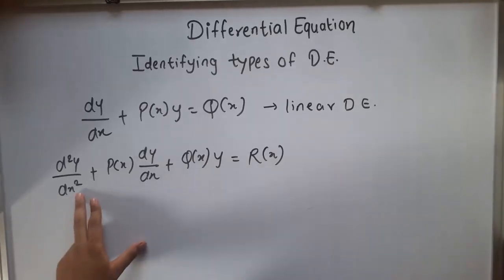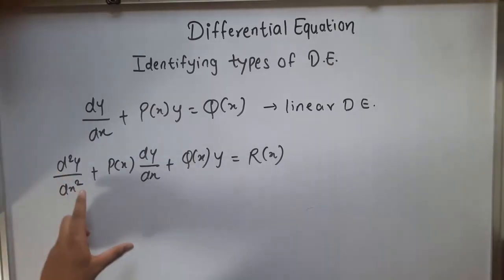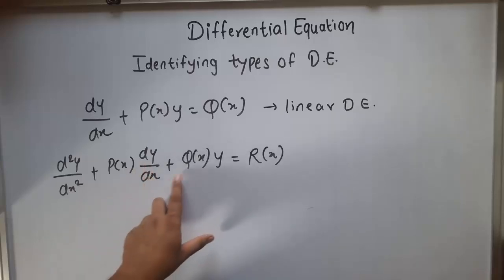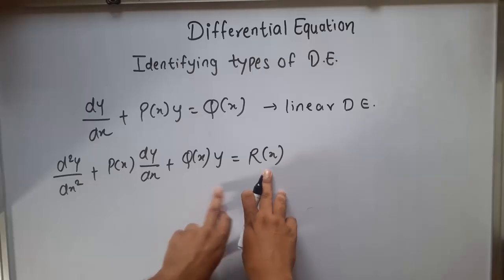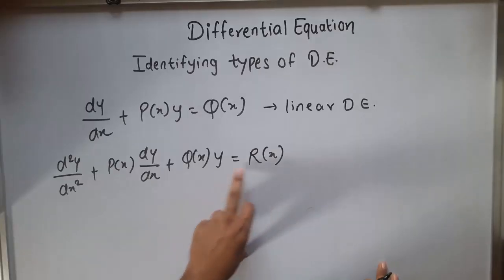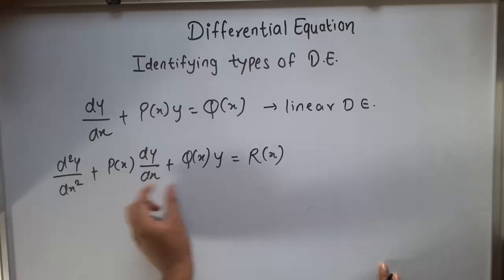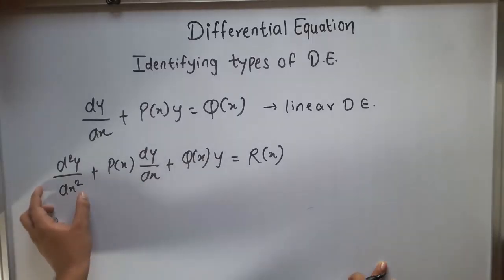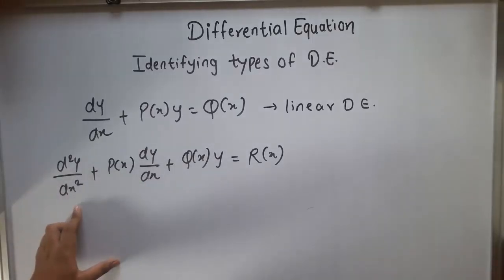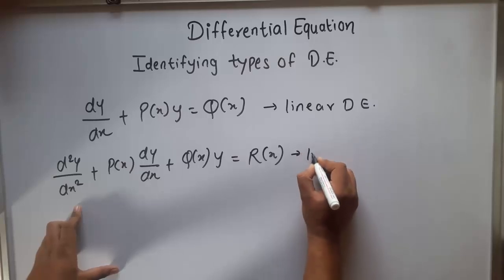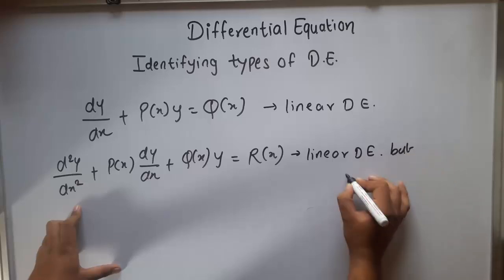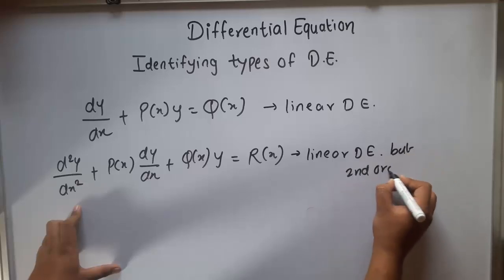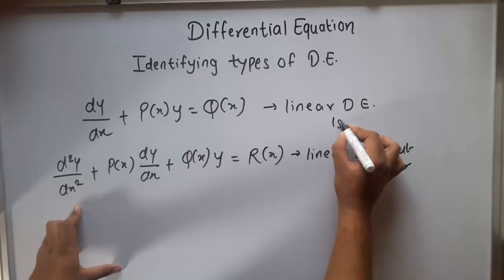This second order equation is linear but its order is second. So d²y/dx² plus p(x) dy/dx plus q(x)y equal to r(x) — here we have only a function of x on the right hand side, and multiples of x and y on the left. We have only d²y/dx² in the leading term. So this is also a linear differential equation, but in second order. The first form is first order.